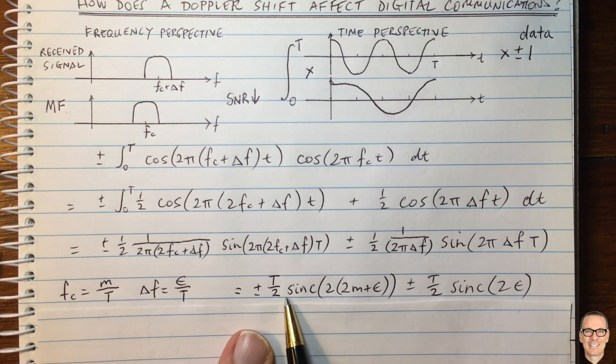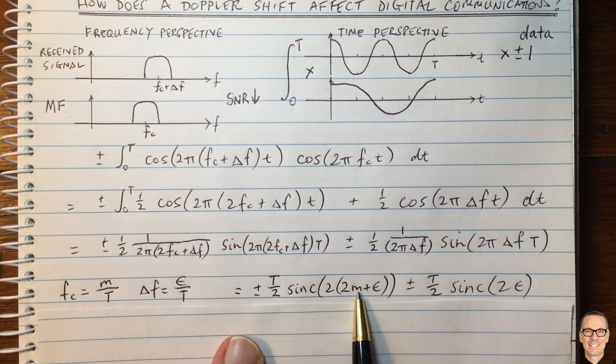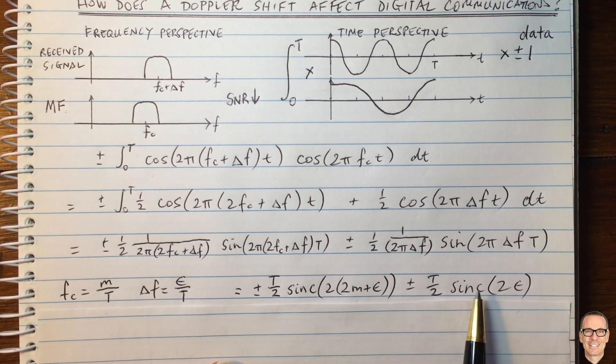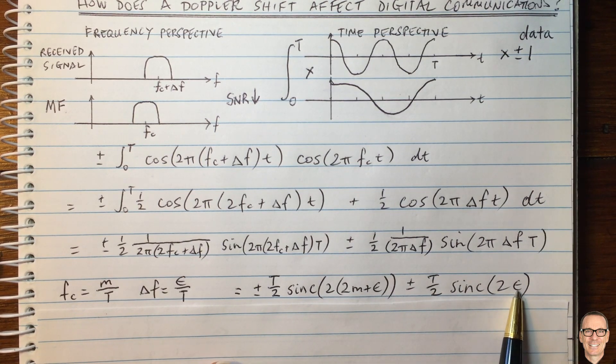So here we can see this first term here, which has the large integer value M in it, and the second term is simply in terms of epsilon.